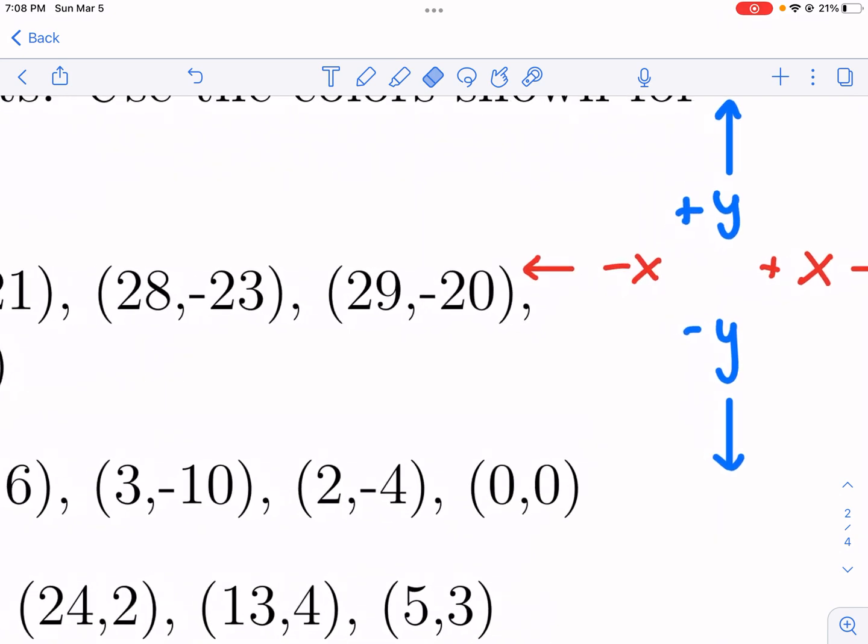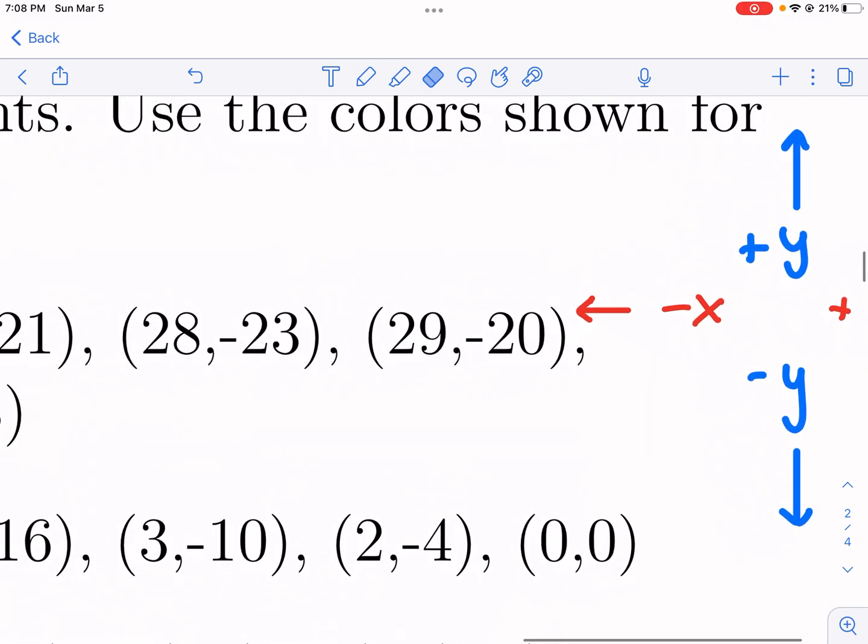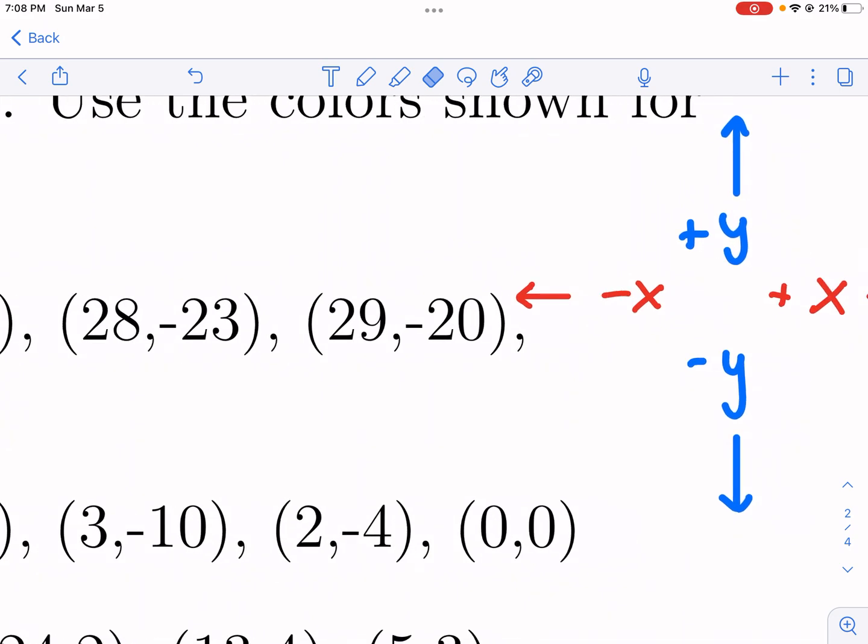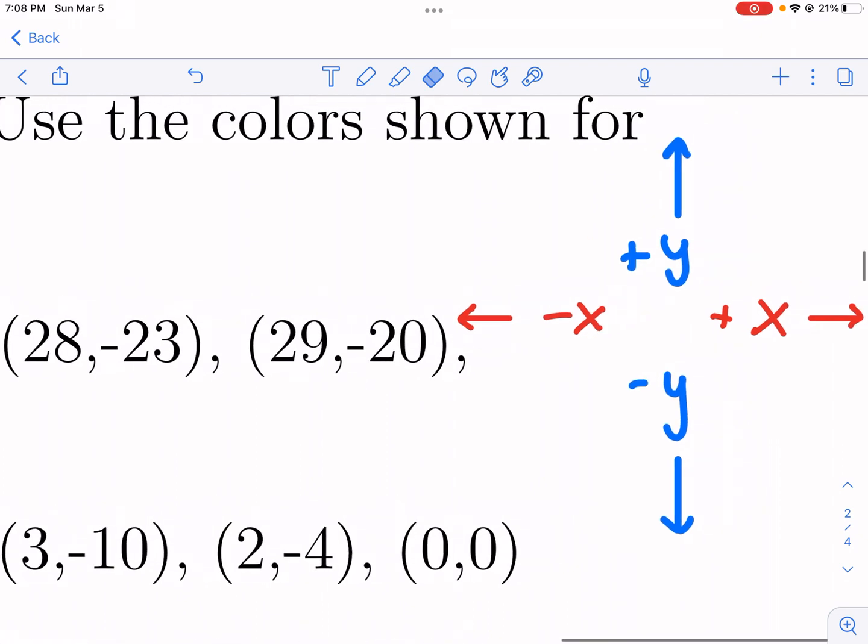The second number after the comma, in this example that's in the center of the screen right now is negative 20, that means we would go down 20 units because it's a negative Y value. The first number is the X, the second number is the Y, and if it's a positive Y we're gonna go up.